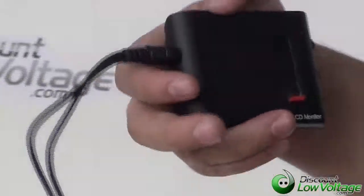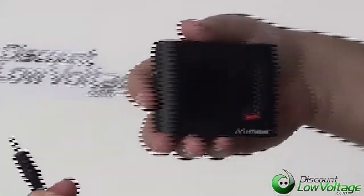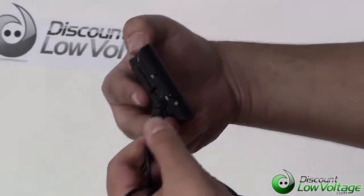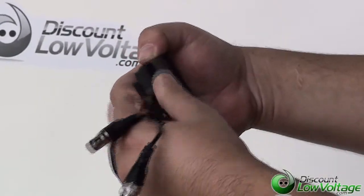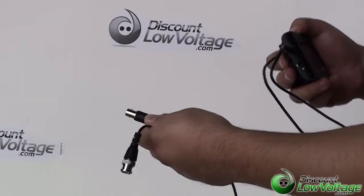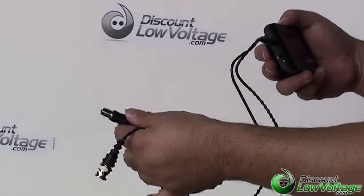Now, as far as the way it plugs in, we have a mic input. It plugs right in on the side there and you have a male and female so this can take care of whatever type of output your camera has.